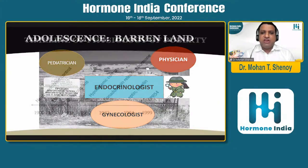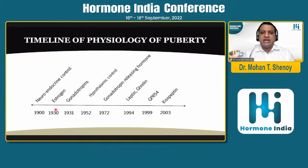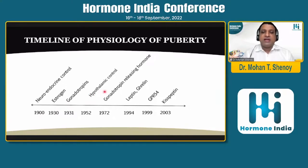You can see the physiology of puberty before I go into Turner's syndrome. Remember that many hormones regulate the type of puberty. There is a neuroendocrine control which was established in the 1900s. As time went on, various other channels were discovered and treatment was also uncovered. We can see that GPR54 and Kisspeptin genes are described as gatekeepers of puberty.